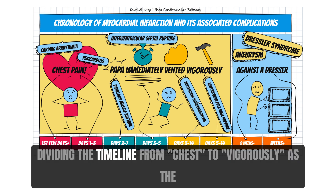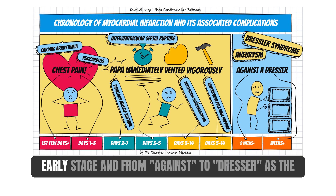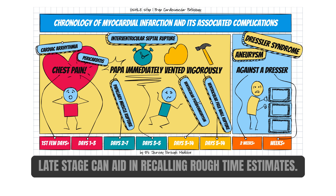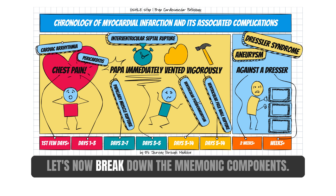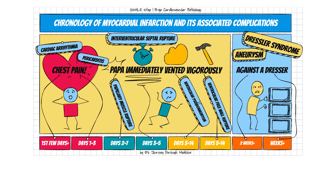Dividing the timeline from chest to vigorously as the early stage and from against to dresser as the late stage can aid in recalling rough time estimates. Let's now break down the mnemonic components.